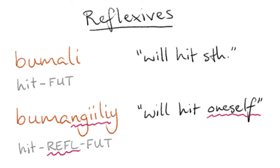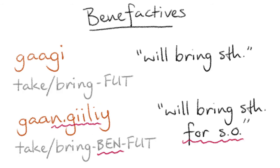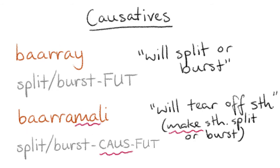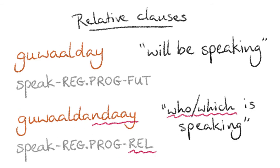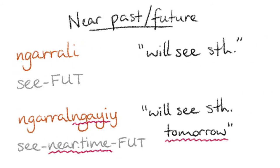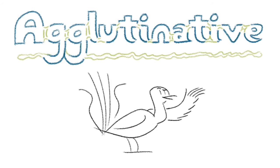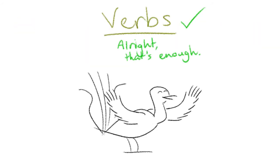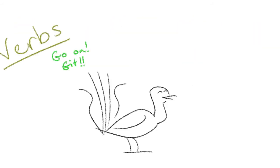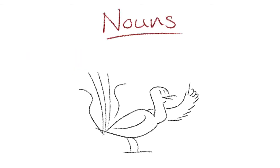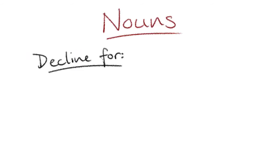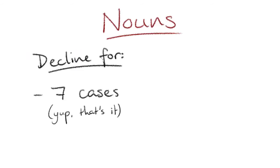There are also reflexives, reciprocals, benefactives, causatives, relative clause suffixes, and suffixes for the time of day. I did mention this language was agglutinative, right? The point being, I think that's enough information on verbs relevant to this report, so let's talk about nouns.